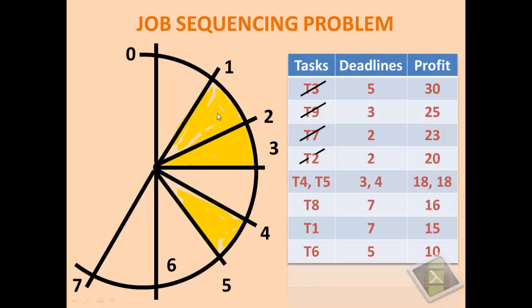After T7 we have T2. But T2 is having deadline 2, which should belong to 1 to 2 slot. But 1 to 2 slot is already allocated to T7. But we have 0 to 1 slot as empty, so we will allocate T2 there.